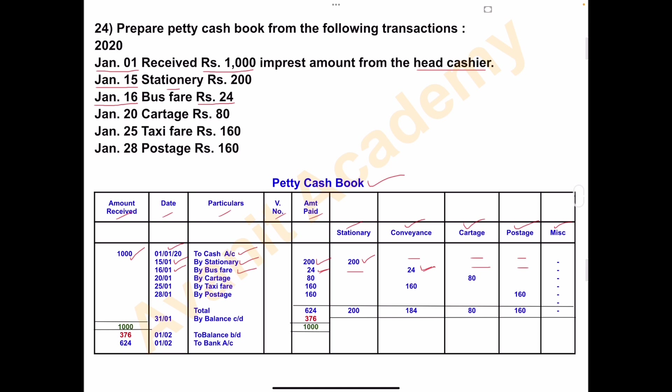Next, on January 20th, cartage Rs. 80. Write: date 20th January, particulars: cartage. Amount paid is Rs. 80. Stationery column: nil. Conveyance column: nil. Cartage column: write Rs. 80. Other column: nil.